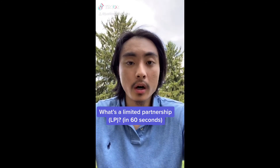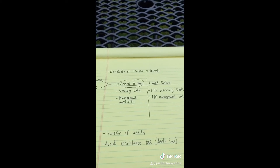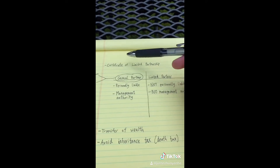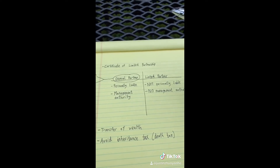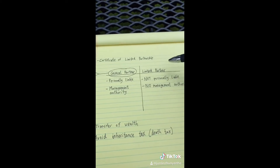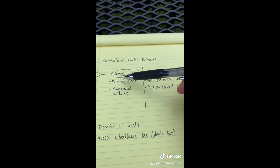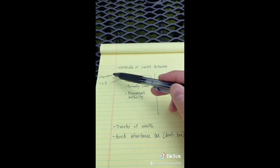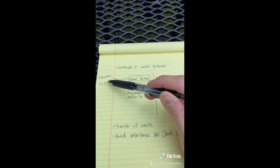What's a limited partnership or LP in 60 seconds? A limited partnership is a type of business entity formed by filing a certificate of limited partnership with the government. There are two types of partners: general partners, who are personally liable for the company but have management authority, and limited partners, who are not personally liable but have no management authority. Because being personally liable puts your personal assets at risk, many people create another business entity like a corporation or LLC to serve as the general partner to fully protect their assets.